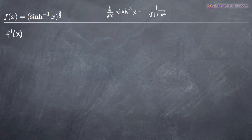When we're talking about chain rule, we've got an outside function here which is basically something raised to the 3 halves power, and then we have an inside function which is just the inverse hyperbolic sine function of x.